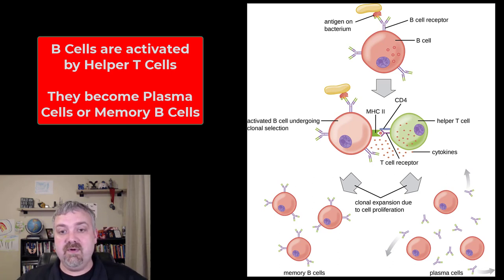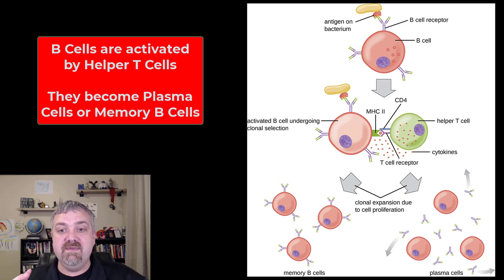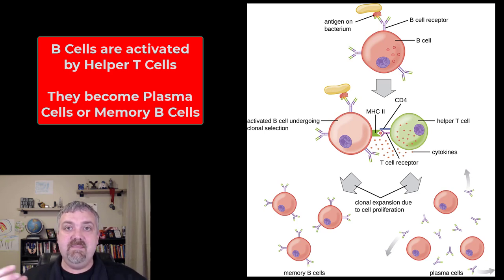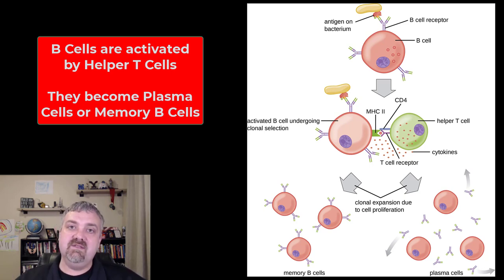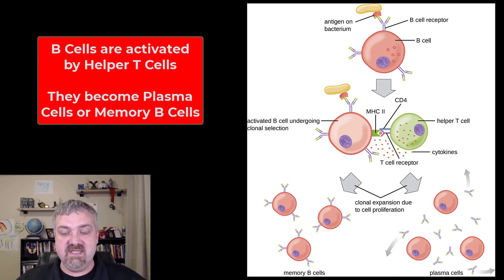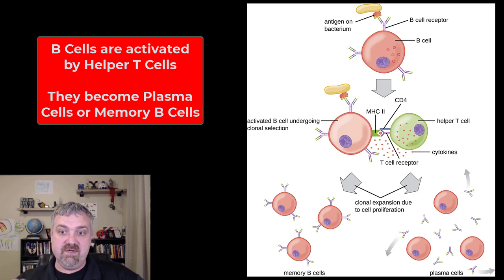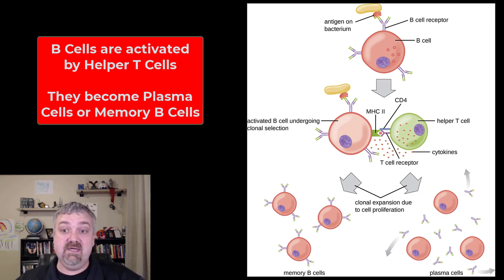Those B cells are going to go through a process of clonal selection. What that means is making sure the B cells produced are not going to attack self antigens. This minimizes — doesn't eliminate, but minimizes — the risk of autoimmunity. So the clonal selection process picks the right B cell that's going to target the right antigen, like the one it sees on this bacteria.